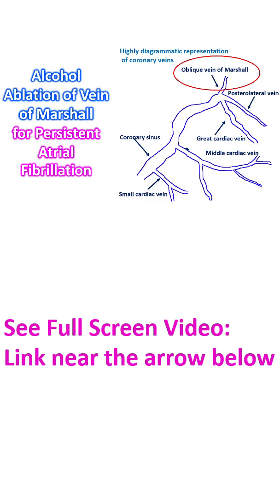Vein of Marshall is a tributary of the coronary sinus with abundant sympathetic and parasympathetic innervation. It has been implicated in the genesis and maintenance of atrial fibrillation. Three reasons described are the myocardial extensions into the structure, node-like remnants within the vein, and the rich autonomic innervation surrounding it.